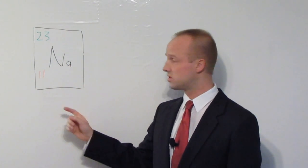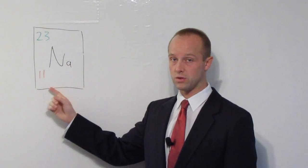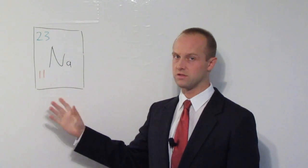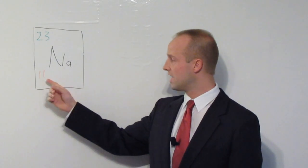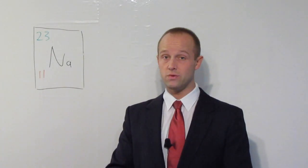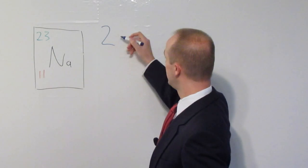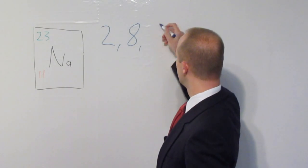If you're interested in the number of electrons, you want the proton number here. You've always got exactly the same number of protons and electrons, because their charges balance each other out. So, we've got 11 electrons in a sodium atom. The only other thing you need to remember are these three numbers in this order: 2, 8, 8.